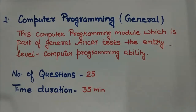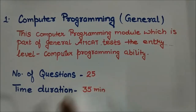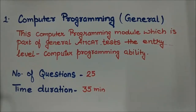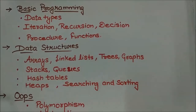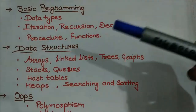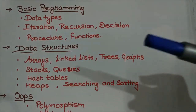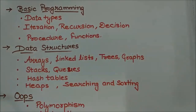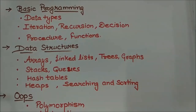In this part there will be 25 questions and the duration you will get is 35 minutes. There will be mainly three categories with some sub-categories. The first is basic programming, which covers data types, iteration, recursion, decision making, and procedures and functions.